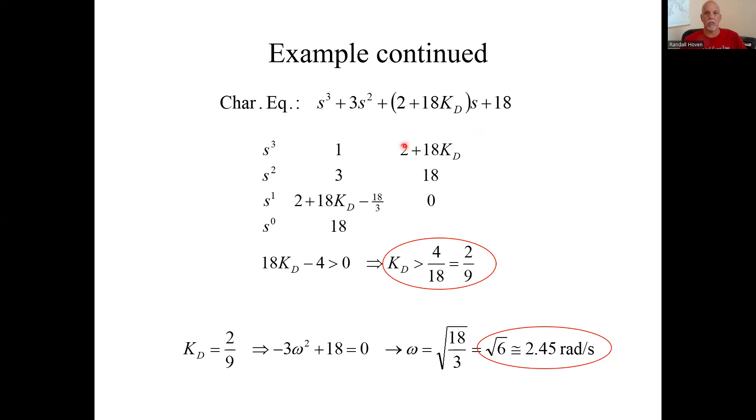Do my Routh array. I'll have six. Three times two divided by three is two. Three times 18 divided by... I kind of did some algebra ahead of time. I must have did it in my head, but I don't always do that reliably. Trust me, it's this. Pull down the 18 and use that little trick. So what we need is for this guy to be greater than zero. Two, 18 over three is six. Two minus six is minus four. Solve for that. K_D needs to be greater than two ninths. That's the range of K_D to assure stability.